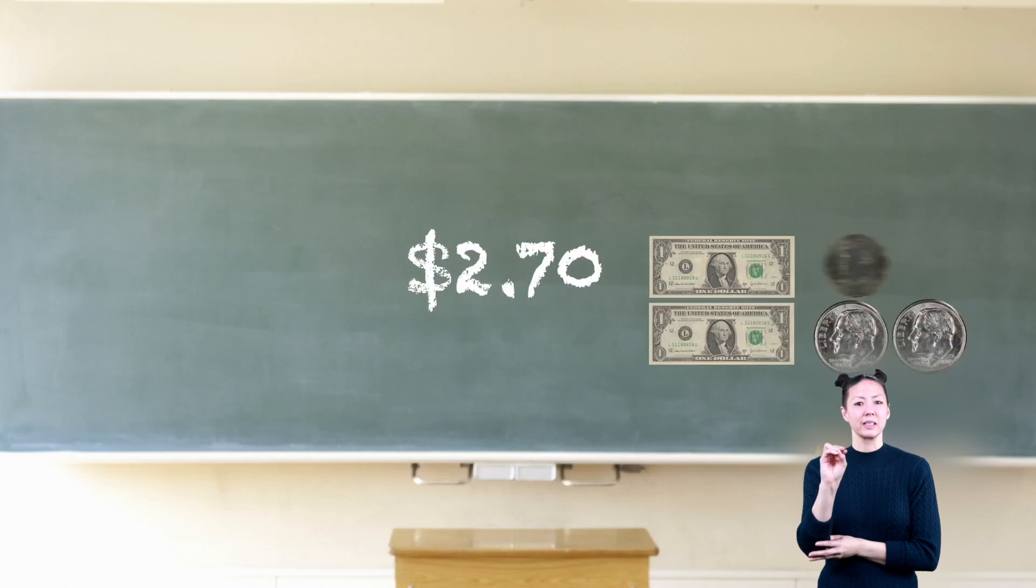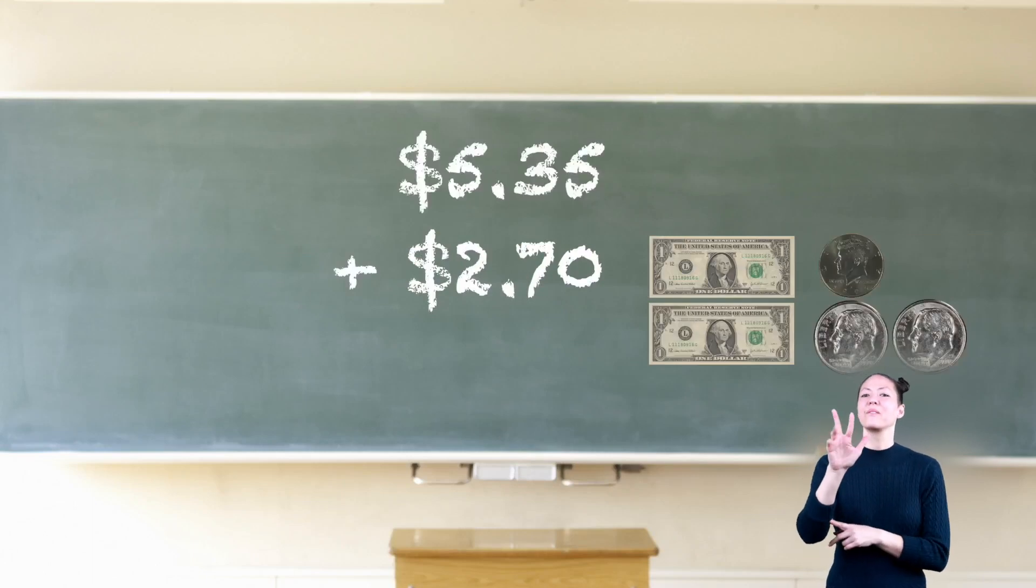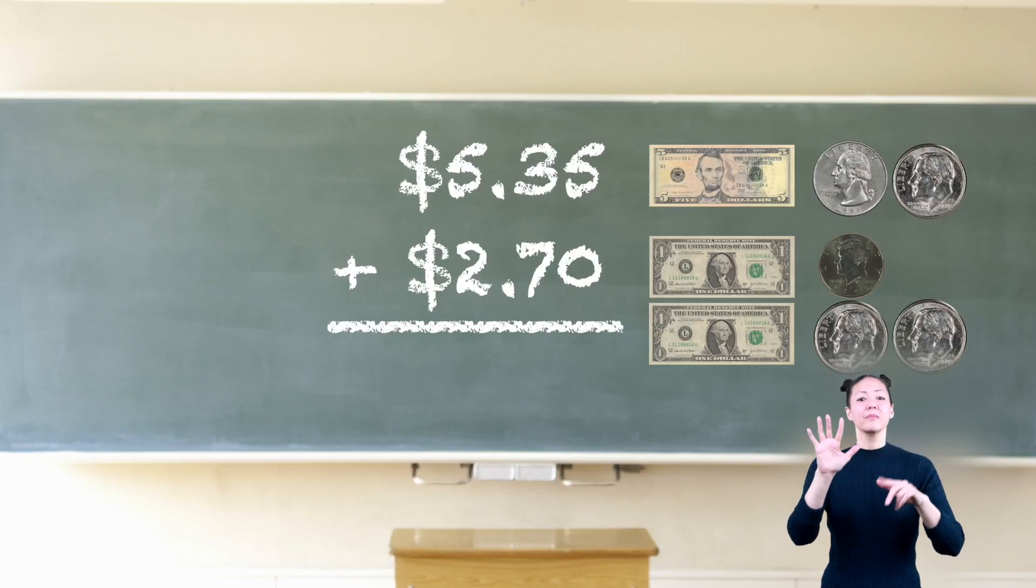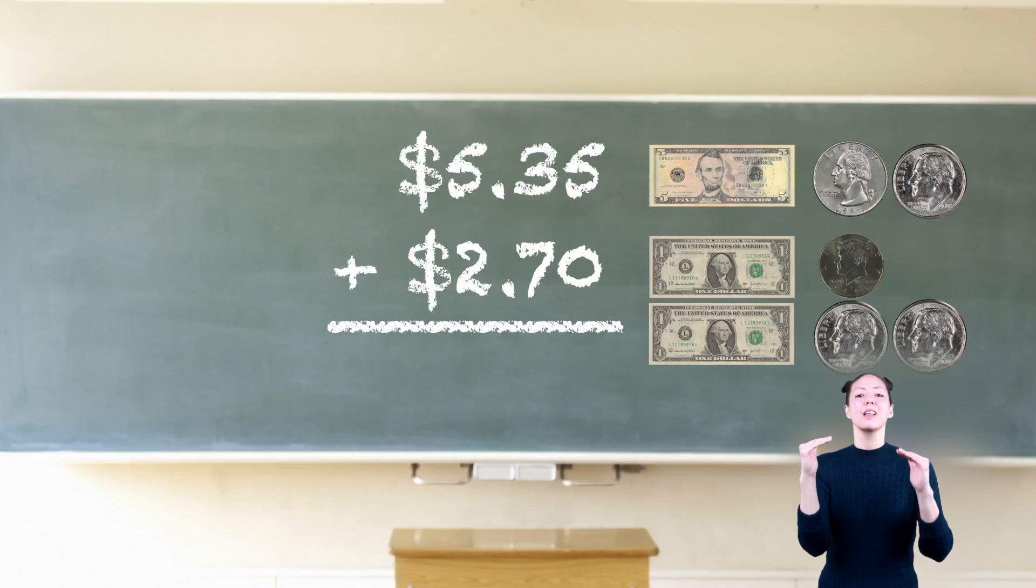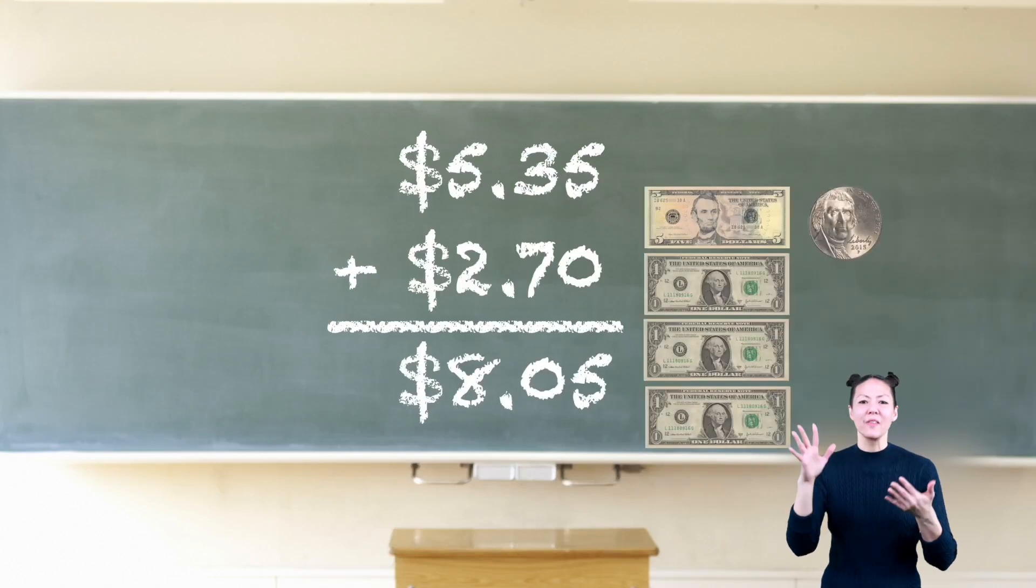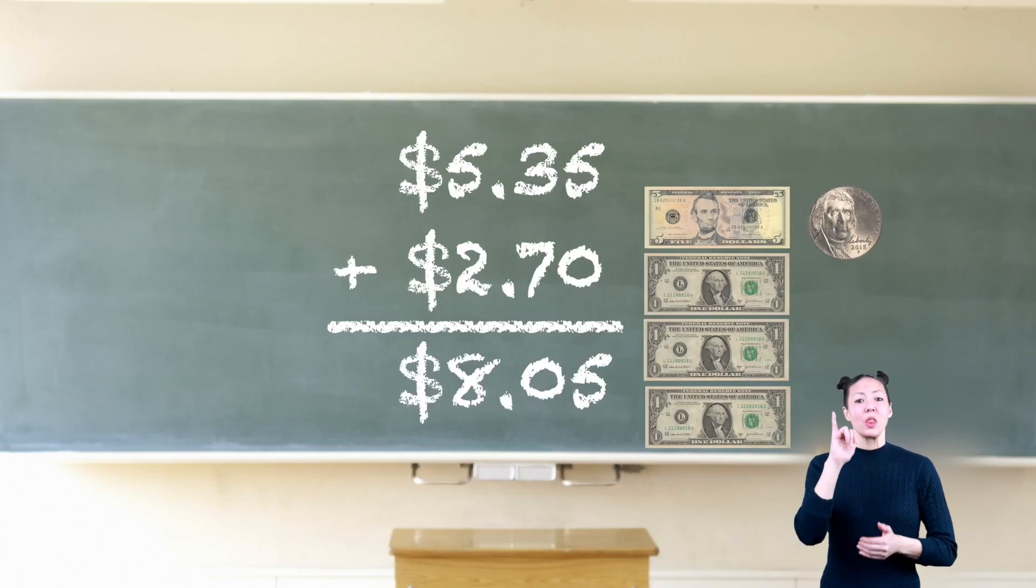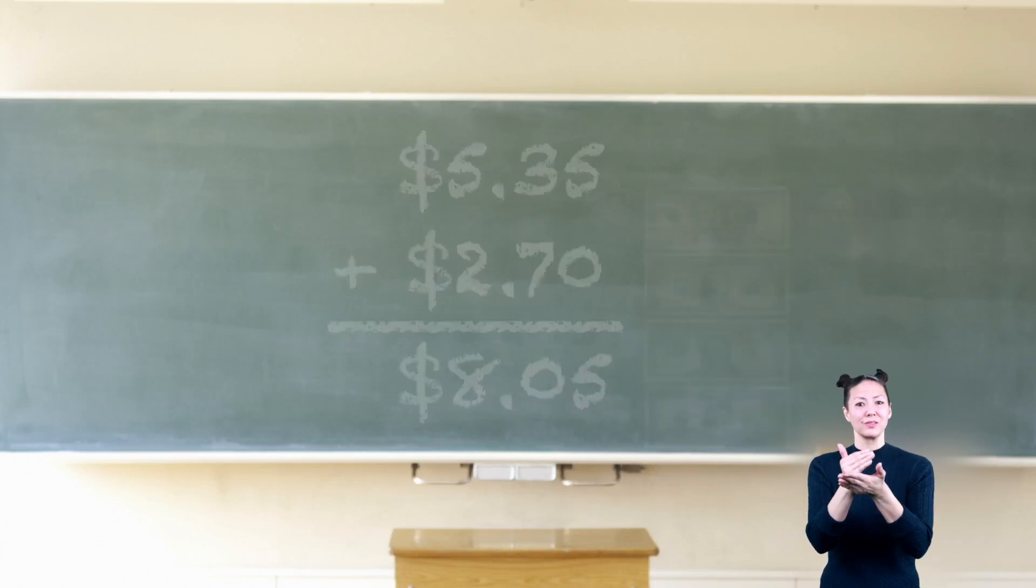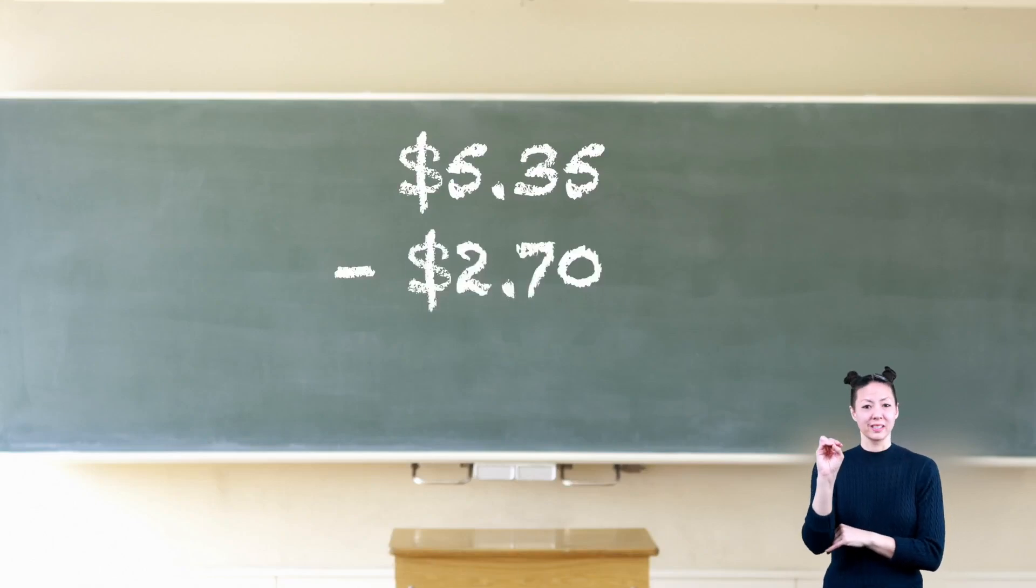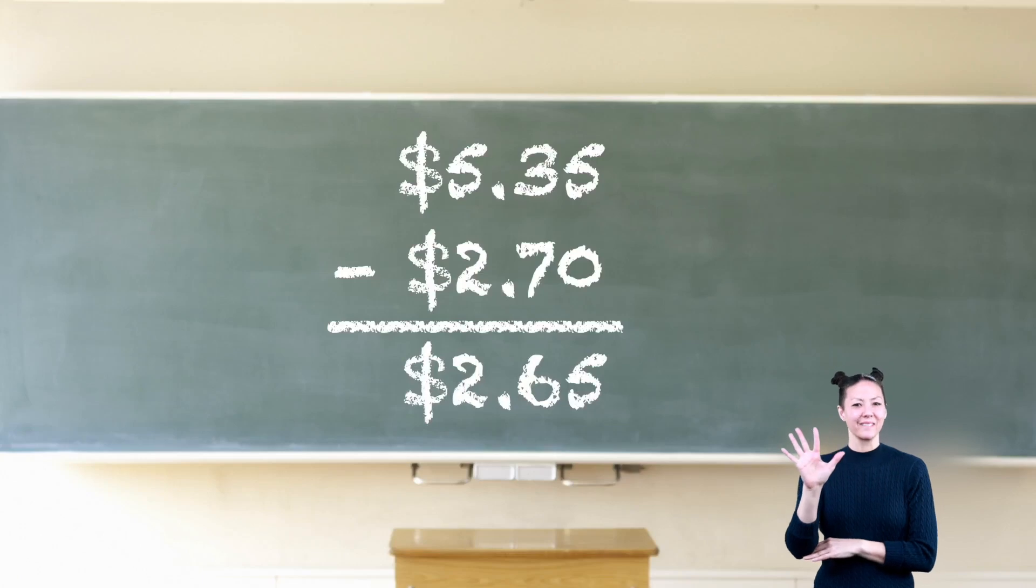Adding the amount of two dollars and seventy cents to our five dollars and thirty-five cents would look like this: 5.35 plus 2.70 equals 8.05, or eight dollars and five cents. Subtracting the amount would look like this: 5.35 minus 2.70 equals 2.65, or two dollars and sixty-five cents.